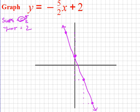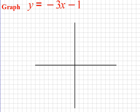I want you to try this one on your own. See if you can identify your slope and y-intercept and graph it yourself. Notice what your slope is — just because there's no denominator doesn't mean we can't add one. Negative 3 is the same as negative 3 over 1. Pause and try it on your own.